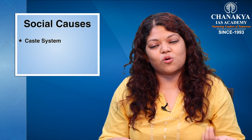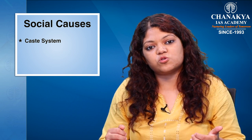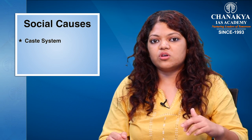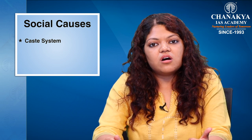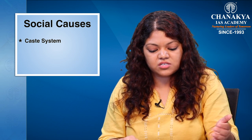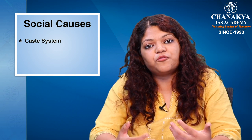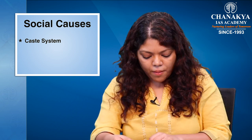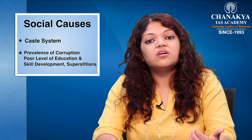The second category is social causes. The caste system is a major factor — it deprives people of land and education, discourages labour mobility, and furthers poverty among those belonging to the lower caste. Apart from that, the prevalence of corruption, poor levels of education and skill development, and even superstitions have contributed as social factors to poverty.